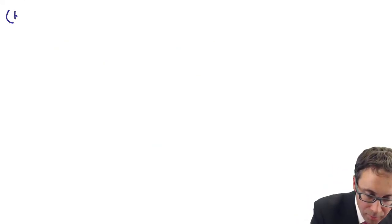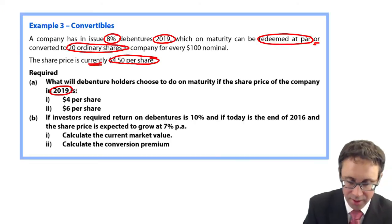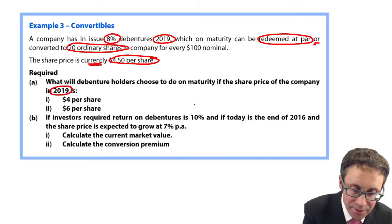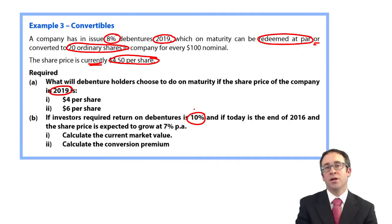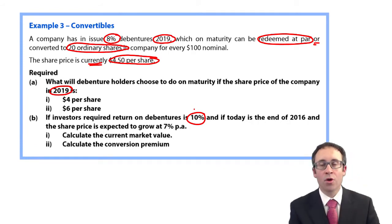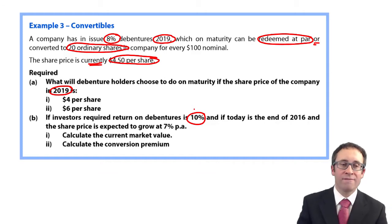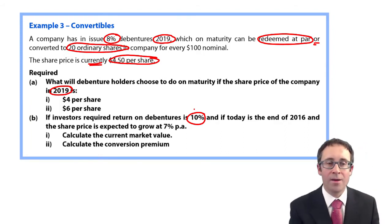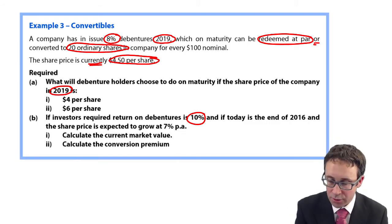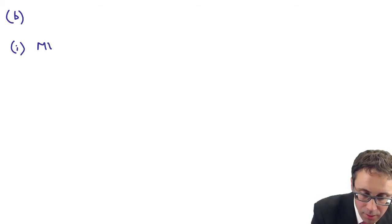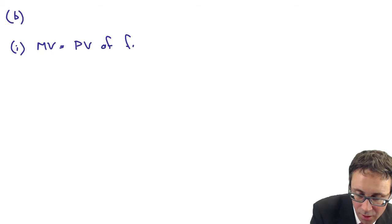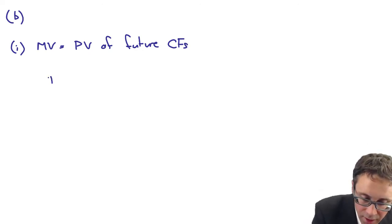Part B. What have we got? This is where it gets funky. The investors require a return on debentures of 10%. So that's your gross return, your yield to maturity. So that's the required rate of return at 10%. If today is the end of 2016, the share price is expected to grow at 7%, calculate the current market value. Well, the market value is the present value of the future cash flows, discounted at the required rate of return of the investors.